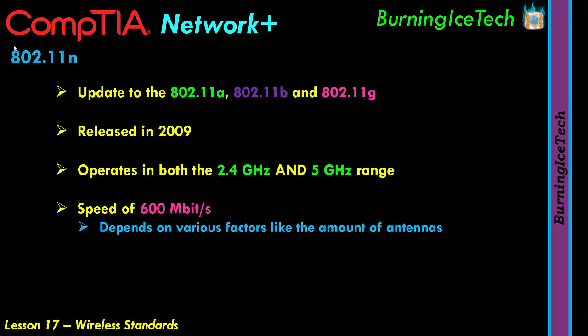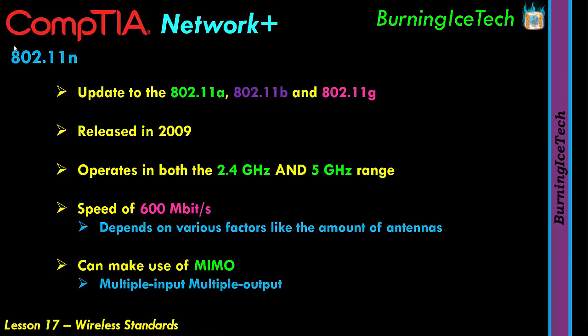This frequency can make use of something called MIMO — Multiple Input, Multiple Output. When you have an access point or router with multiple antennas, up to four, you can have multiple input and output streams. You can connect multiple phones, tablets, and laptops using these MIMO streams. A phone, for example, doesn't use much data so you give it one stream; something more resource-hungry like a laptop can get two, three, or four streams.